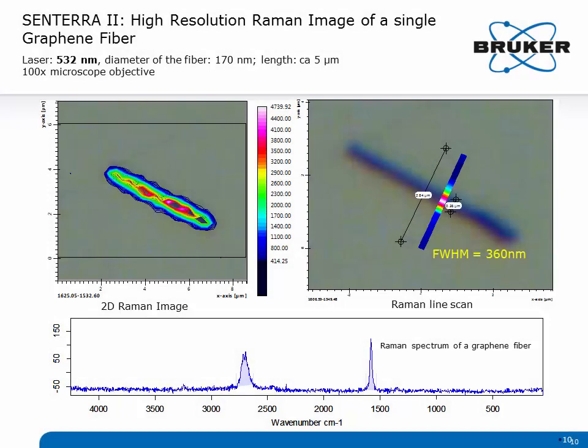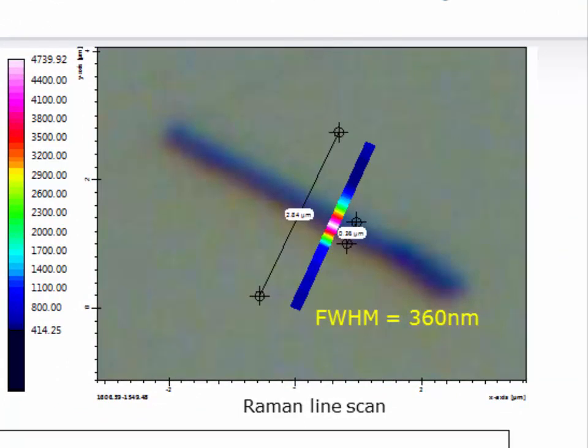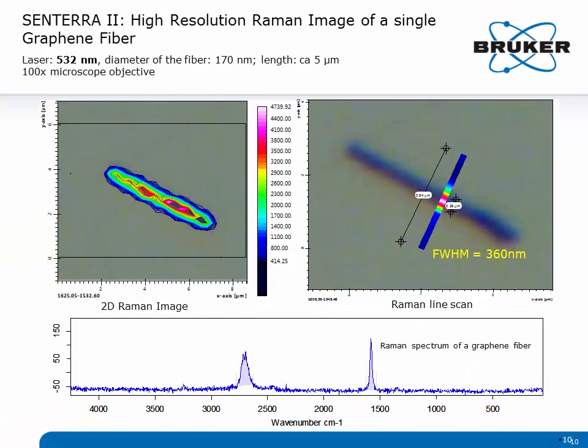For our final test, we measured a graphene fiber that measures 170 nm by 5 µm. On the left-hand side, you can see the well-defined measurement of the fiber. On the right-hand side, you can see a line map measured across the graphene fiber. The full width at half maximum is exactly 360 nm, which is also our diffraction limit. So the Sentera II Raman microscope is able to achieve the best physically possible spatial resolution.